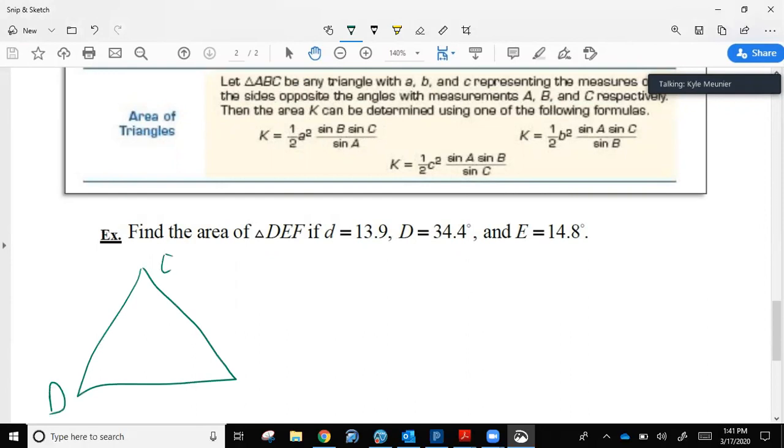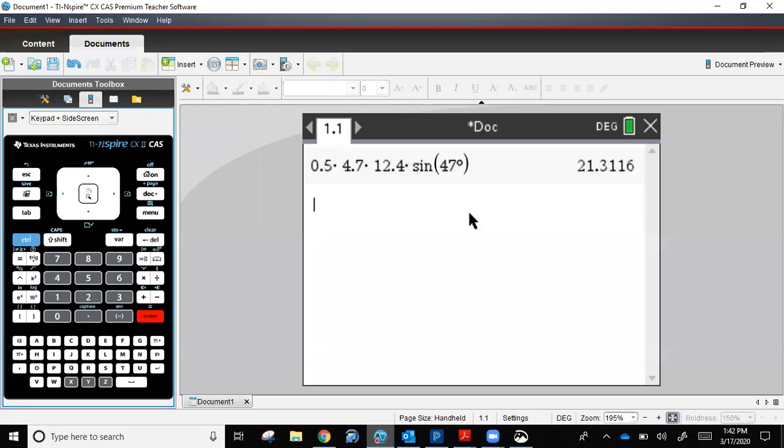We have triangle DEF, side D, side E, side F. We know angle D is 34.4 degrees. We know angle E is 14.8 degrees. And we know side D is 13.9. Since we have two angles, we can figure out angle F immediately. Because F plus 14.8 plus 34.4 has to be 180. So F for our angle will be 180 minus 14.8 minus 34.4, giving us 130.8.